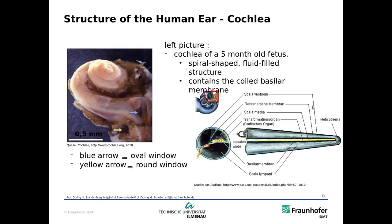Here you can see the basilar membrane — this is basically unrolling the cochlea. You can see here it is rolled up, and here it is unrolled. And here you can see a cross section of the cochlea. In the middle we have this basilar membrane, where we have the nerve endings placed, which detect the vibrations inside. So it's a very intricate structure for decomposing the signal into different frequency components.